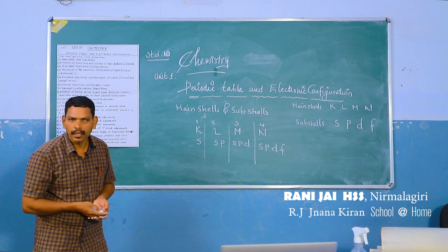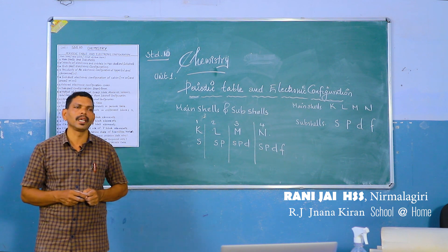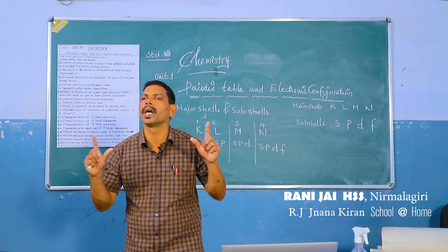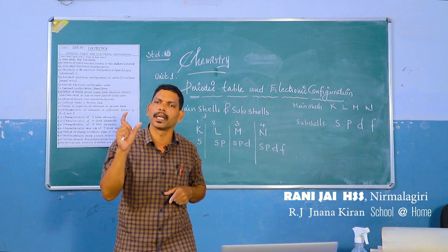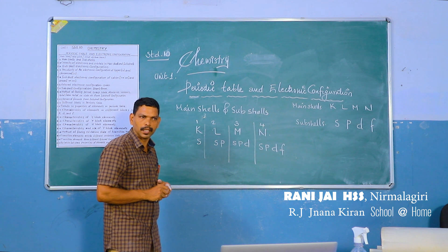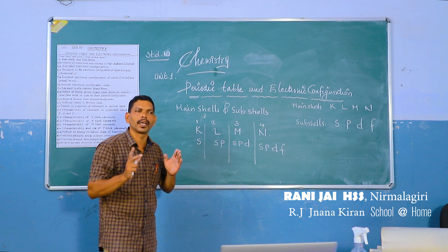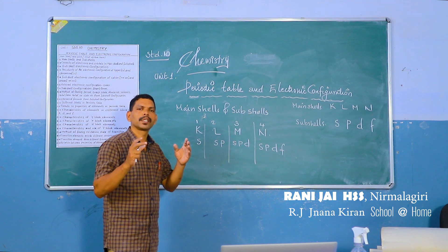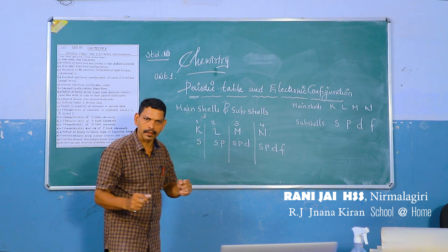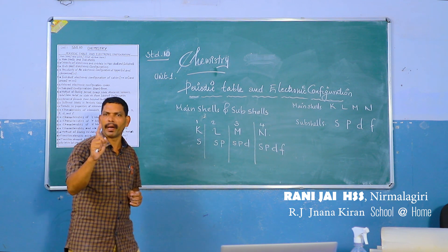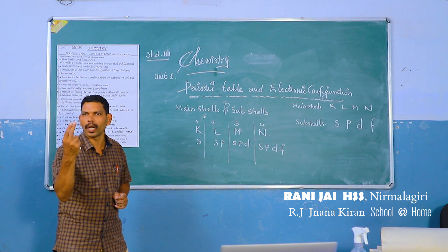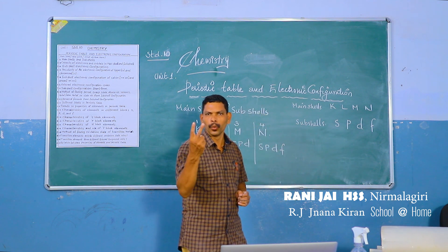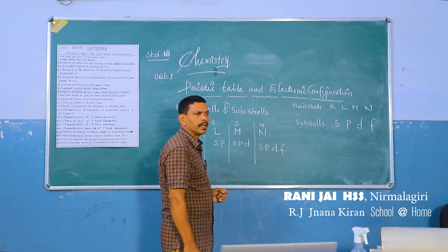What are orbitals? Orbitals are three-dimensional regions where there is maximum probability of finding an electron. Main shells are divided into sub-shells, and sub-shells are further divided into orbitals. One orbital can hold a maximum of two electrons — the maximum capacity of each orbital is two.